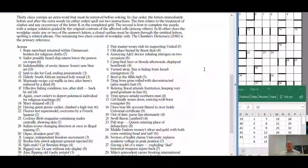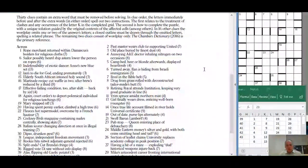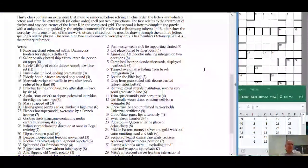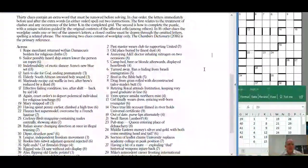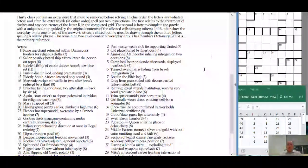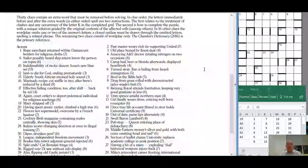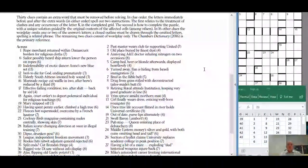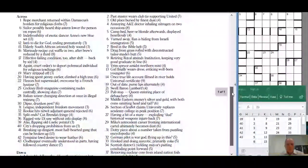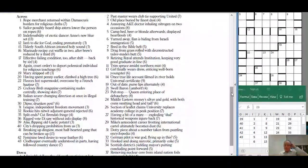The preamble says 30 clues contain an extra word that must be removed before solving. In clue order the letters immediately before and after the extra words in either order spell out two instructions - the first relates to the treatment of clashes in the grid and any occurrence of the letter K, the second is how to complete the puzzle. In sixteen other clues the wordplay omits one or two of the letters, a closed outline must be drawn through the omitted letters spelling a related phrase. The remaining two clues consist of wordplay only.